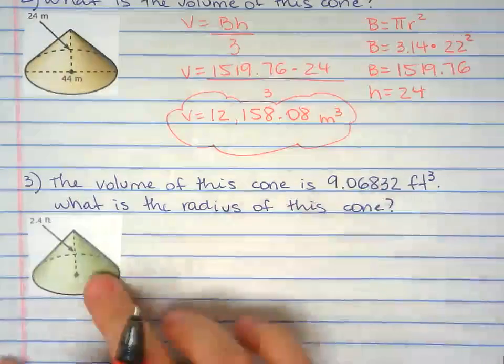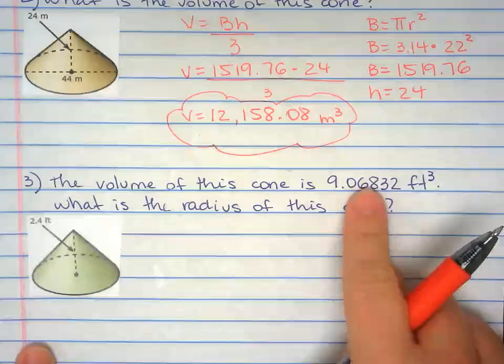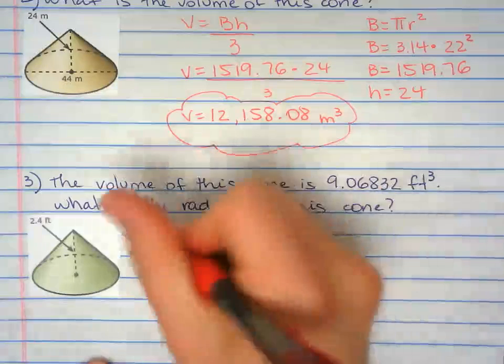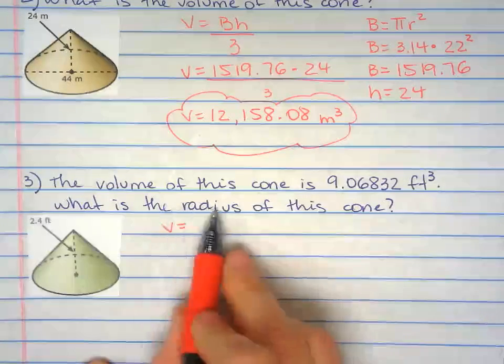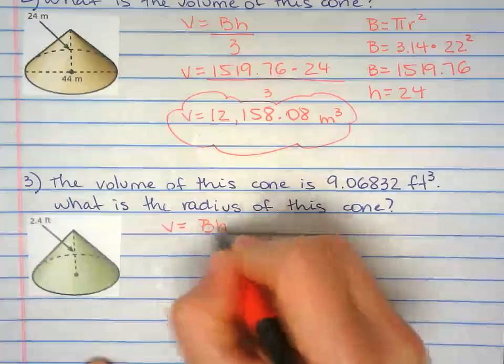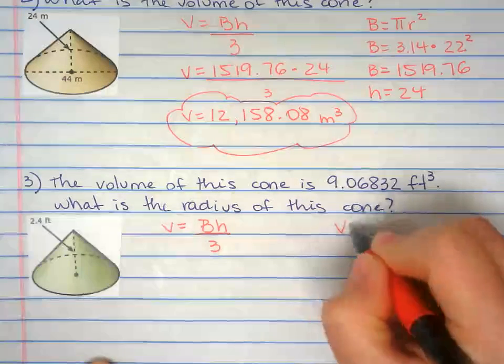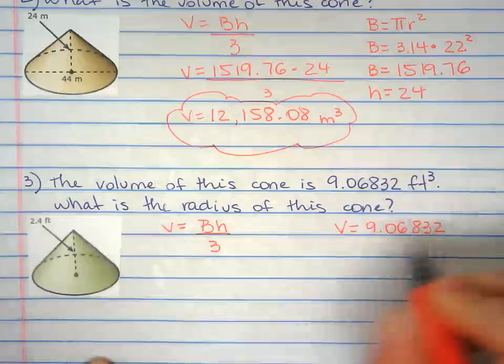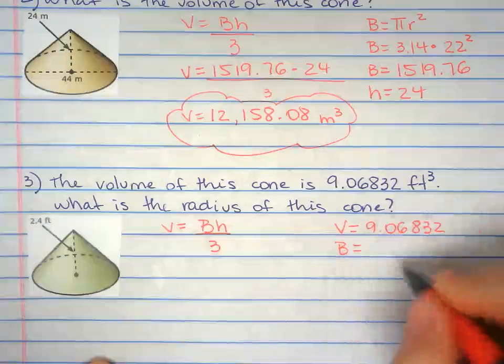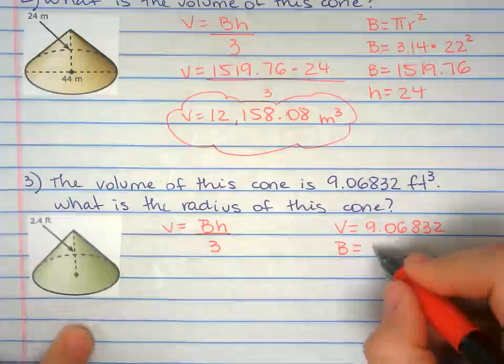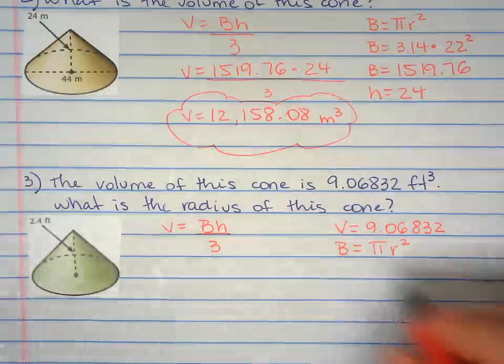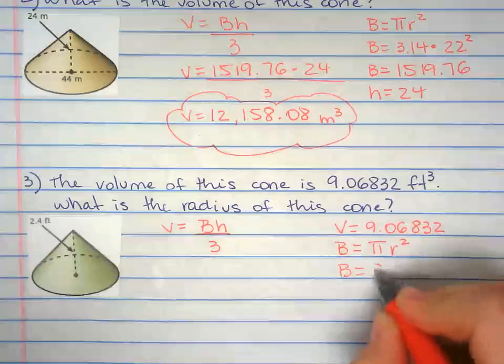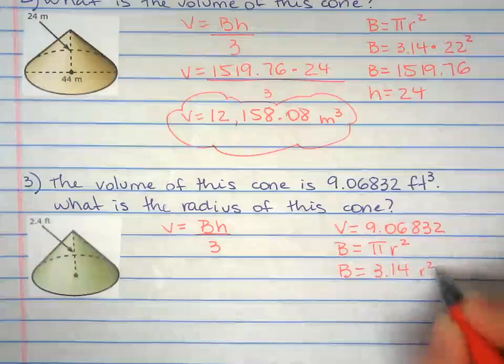Last one. Now we have to work it backwards. We have a cone with that volume and then we're looking for the radius. Copy the formula down and V is given at this time. B is the area of the base. We don't know, but we do know it's pi r squared. And we also know we're using 3.14 for pi.